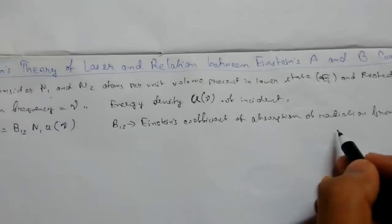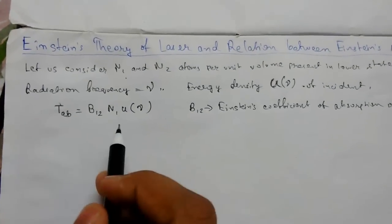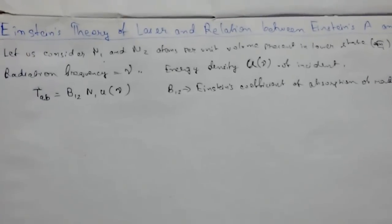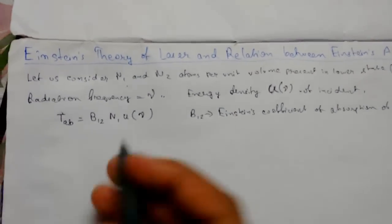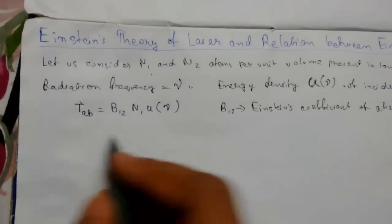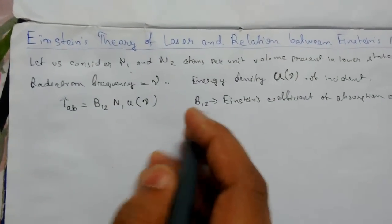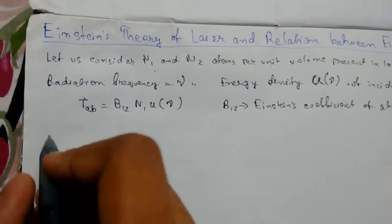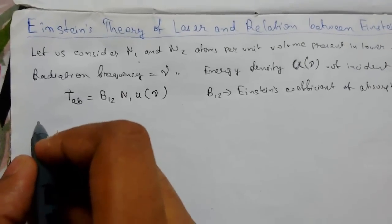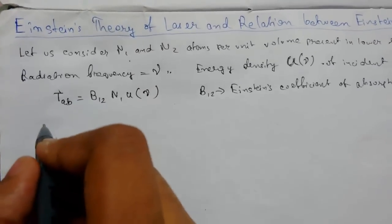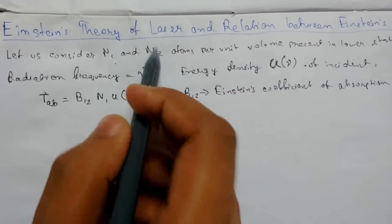That was the absorption process, which takes place from lower to higher energy state. Now, atoms in the higher excited state emit radiation when they return to the ground state. This can occur by two processes: spontaneous emission and stimulated emission. Spontaneous emission does not depend on the intensity of light, so it is proportional only to the number of atoms per unit volume in the excited state n2.